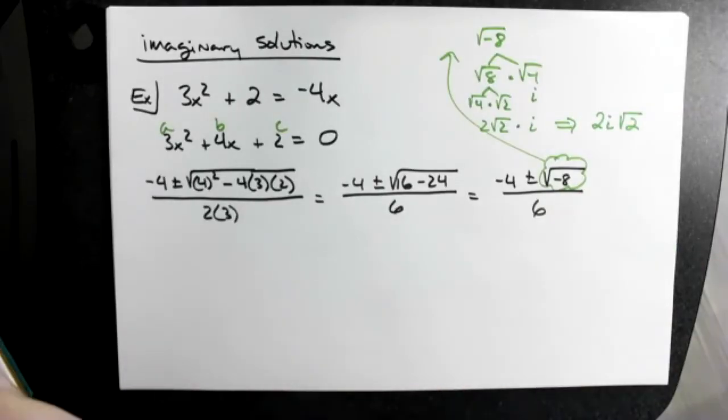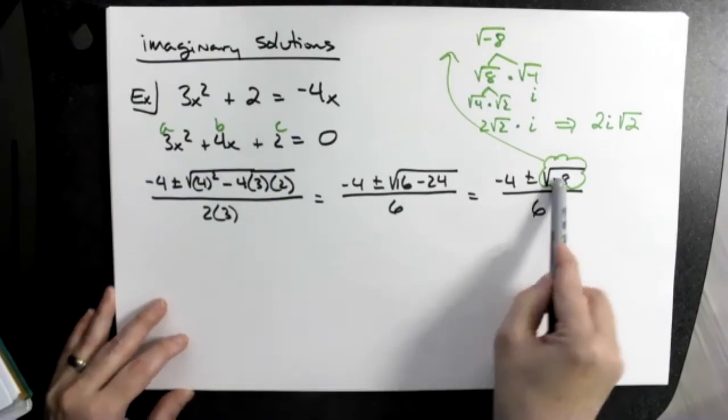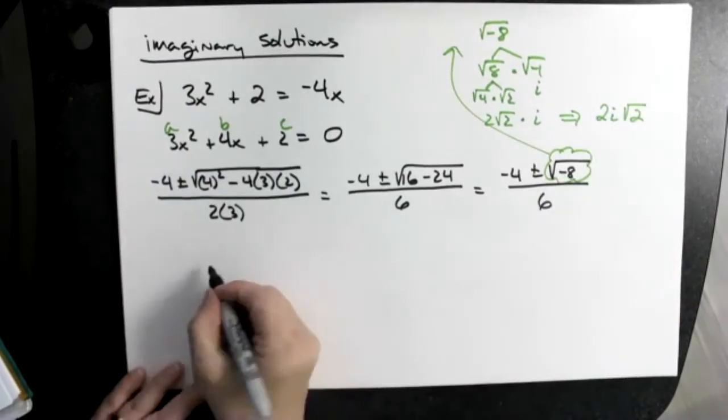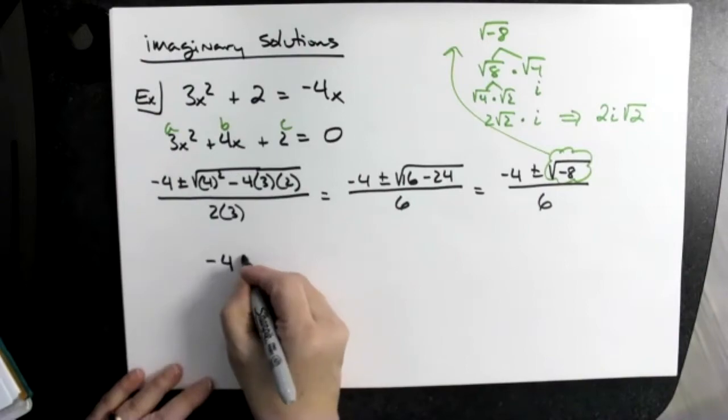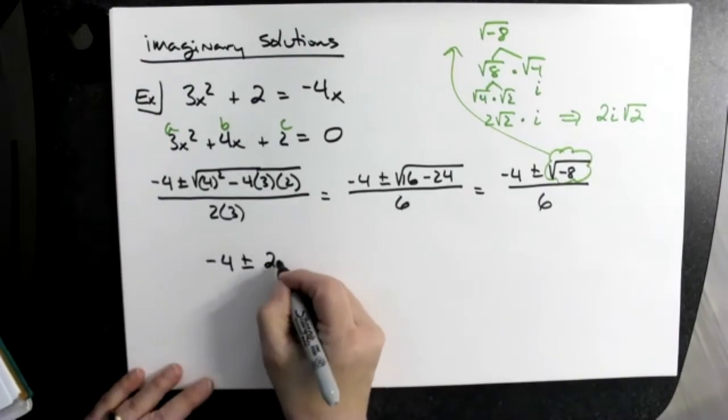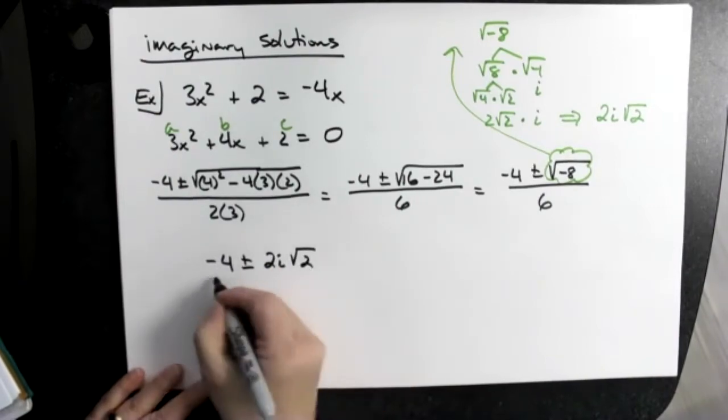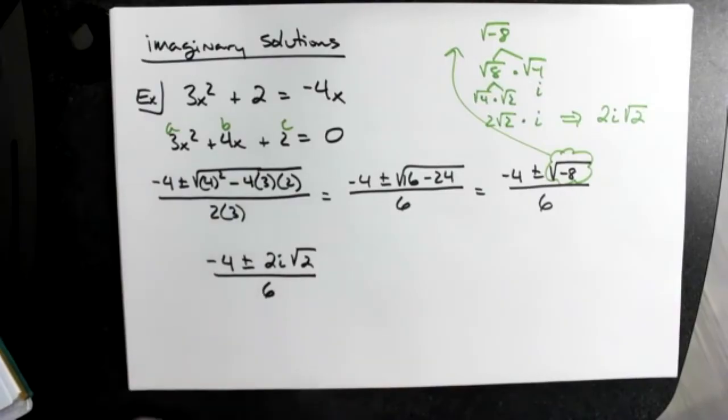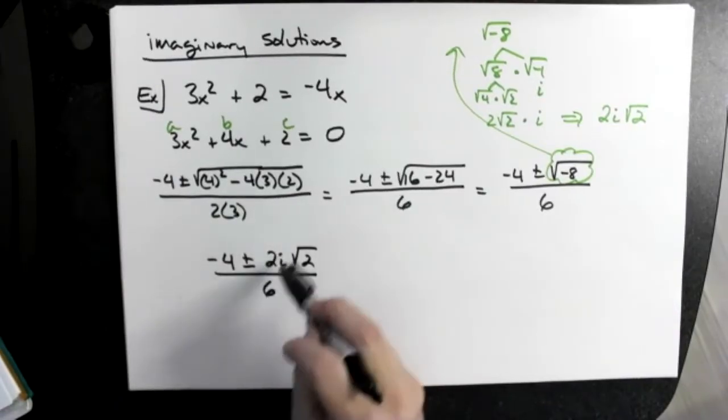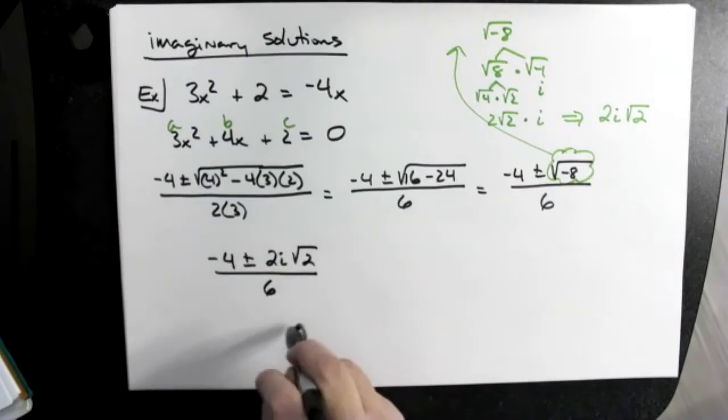Now I'm going to come back down here and bring it down here. I'm going to replace it with what we know it equals now: negative 4 plus or minus 2i radical 2, all over 6. And again, we don't want to just go crazy crossing things out, we want to factor out.